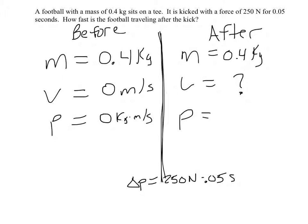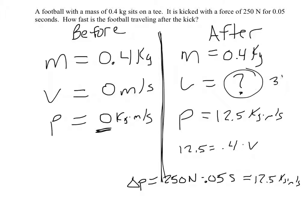We get 12.5 kilogram meters per second. That's the change in momentum. So we start with 0, so the new momentum is 12.5 kilograms meters per second. So then what is the velocity? Well, 12.5 equals 0.4 times V. So now we just solve for V. And we get the velocity is 31.25 meters per second.